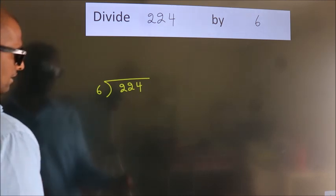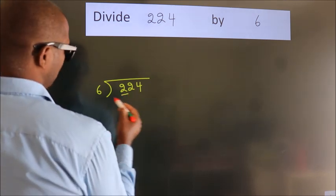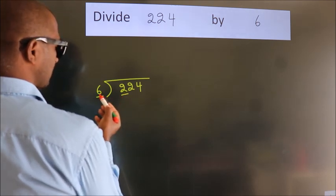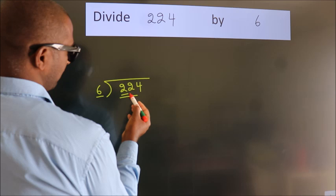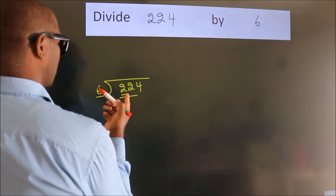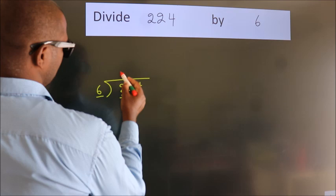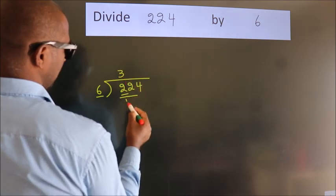Next, here we have 2, here 6. 2 is smaller than 6, so we should take 2 numbers: 22. A number close to 22 in the 6 table is 6 threes, 18.